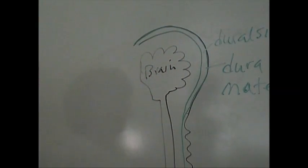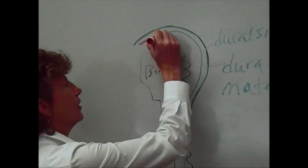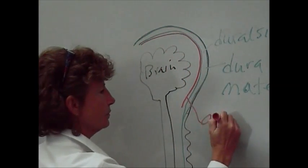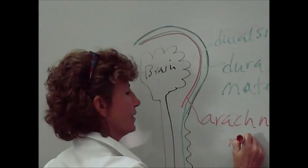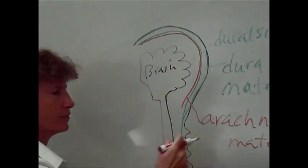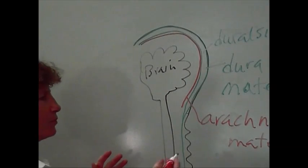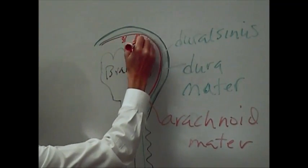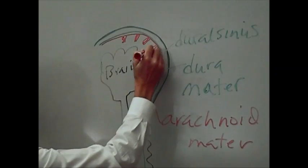Then underneath the dura mater, you've got another layer known as the arachnoid mater. And the arachnoid mater is named because arachnoid, arachnophobia, it looks like something spidery. So it has these little spider-webby connections like this that kind of come down from it.